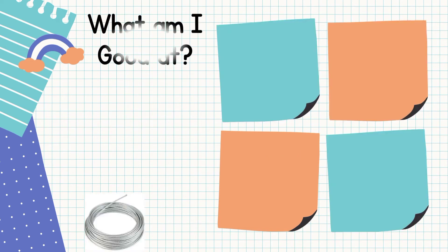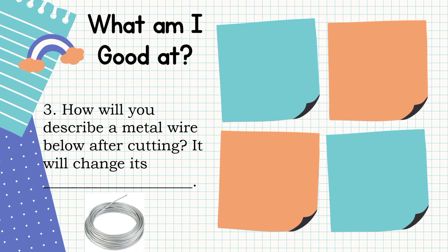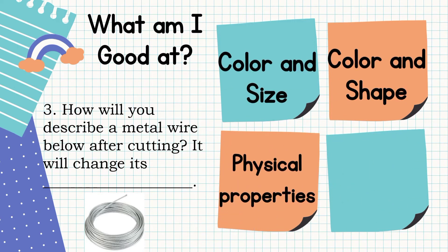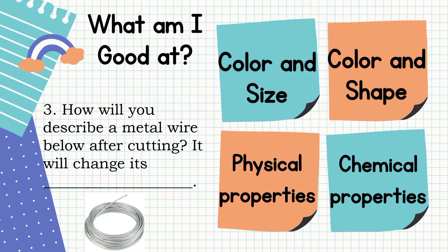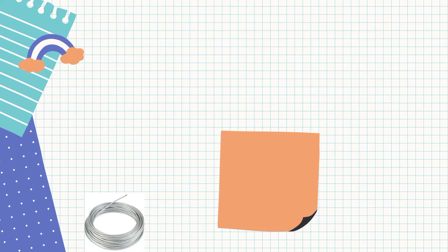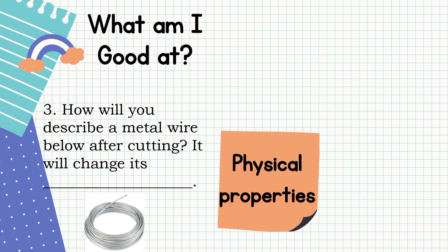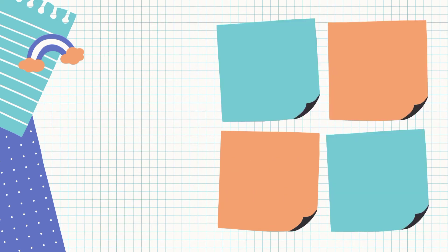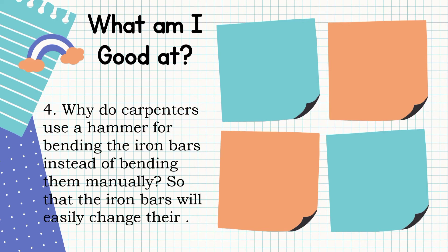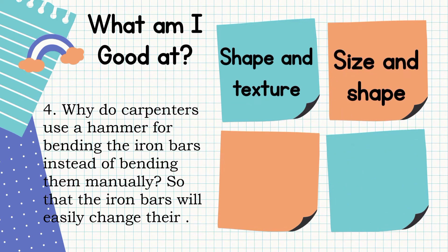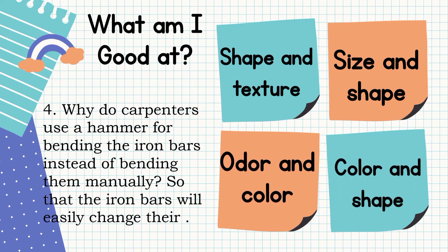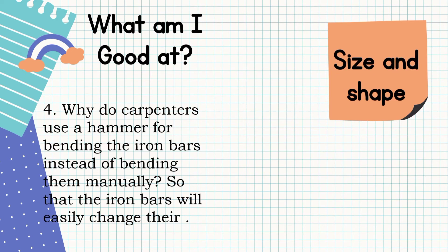How will you describe a metal wire after cutting? It will change its color and size, color and shape, physical properties, or chemical properties. The correct answer is physical properties. Why do carpenters use a hammer for bending iron bars instead of bending them manually? The correct answer is so that the iron bars will easily change their size and shape.